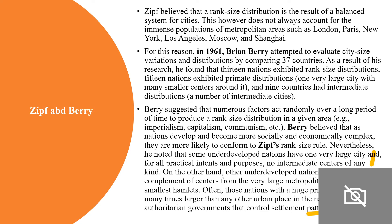Zipf believed that a rank-size distribution is the result of a balanced system for cities, especially in metropolitan areas. Then in 1961, Berry attempted to evaluate city size distributions by comparing 37 countries. Berry believed that as nations develop and become more socially and economically complex, they are more likely to conform to Zipf's rank-size rule.